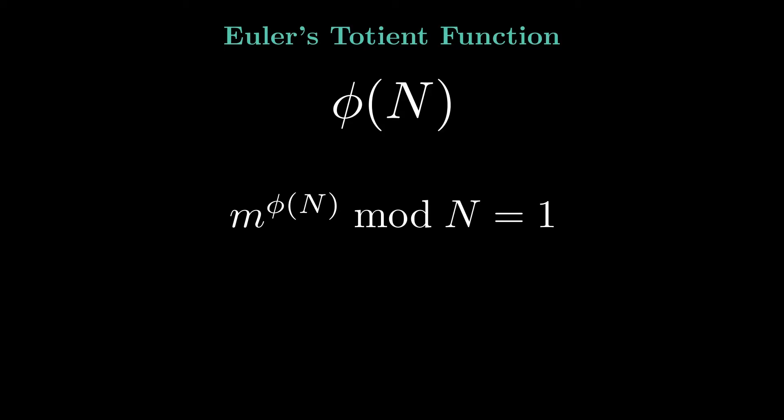Euler's theorem states that if m and n are coprime, then m raised to the power of φ(n) modulo n equals 1.